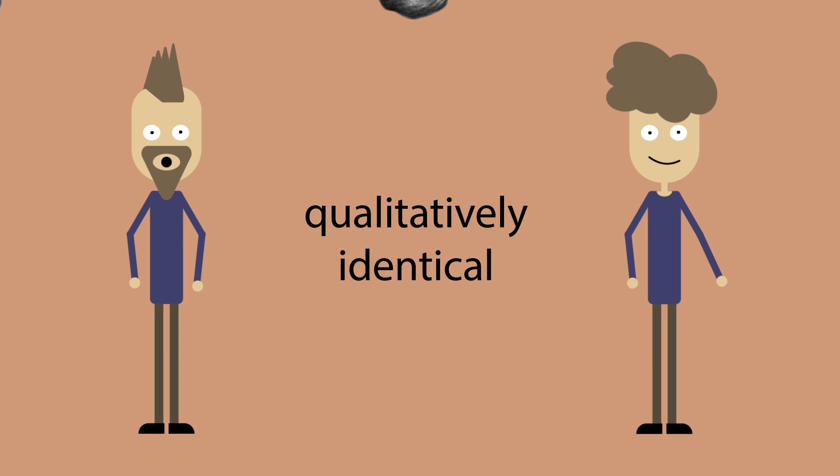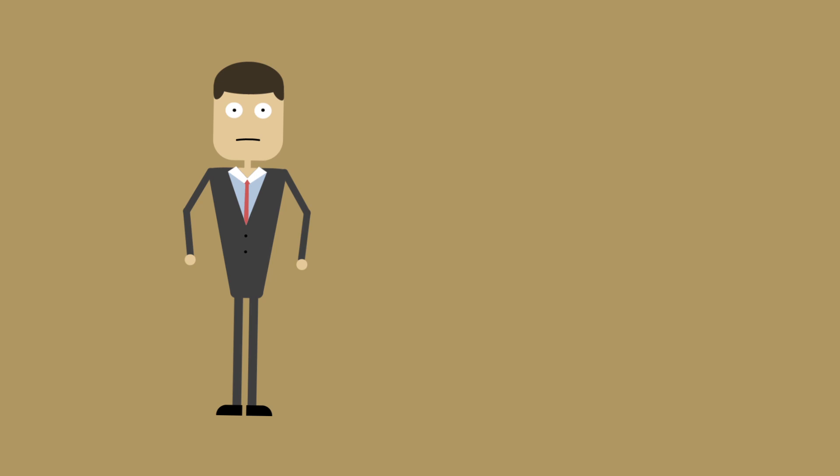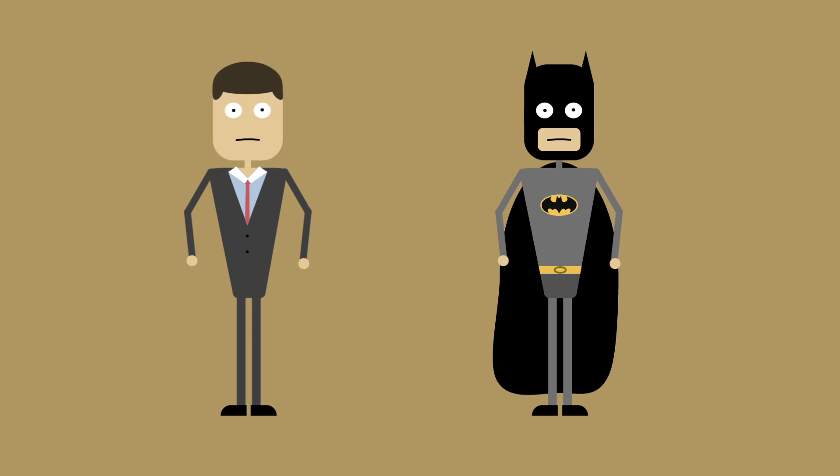However, when philosophers talk about personal identity, they're concerned with numerical identity. So we can say that past and present Steve are one and the same person. For example, Bruce Wayne and Batman are qualitatively different but numerically identical, as Bruce Wayne is the same person as Batman.